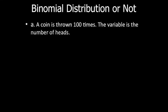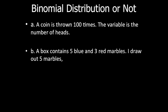Let's look at some examples and identify whether they are binomial distributions or not. The first one: a coin is thrown 100 times and the variable is the number of heads. This is a binomial distribution because a coin has two possible outcomes — head or tails — and each toss is independent of every other toss.